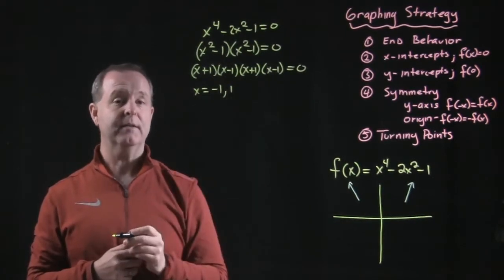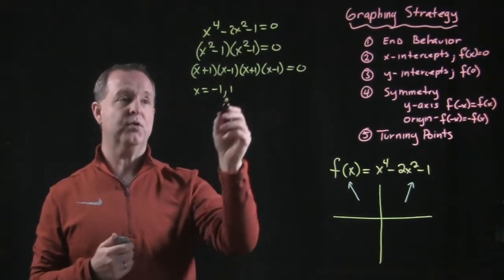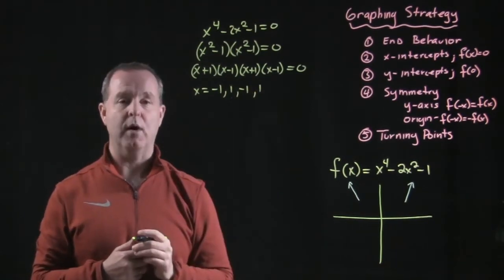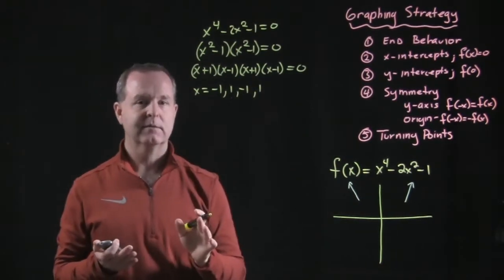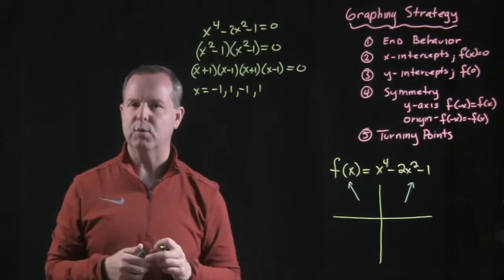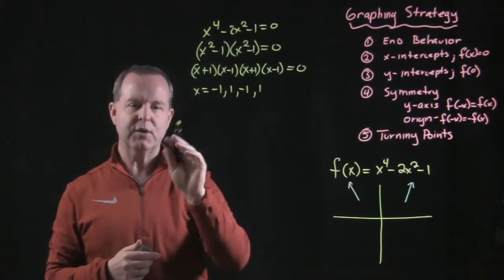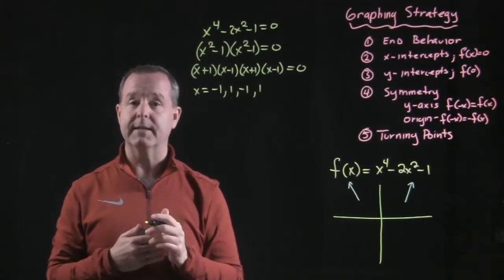And the third factor, if that were zero, that would be true if x equals negative 1. And the last one, x equals 1. So I have two or four solutions depending on the language we want to use. We really have four solutions, but two of those solutions are of multiplicity 2.